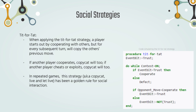A common social strategy used is the tit-for-tat method, wherein a player starts out by cooperating with others, but for every move afterwards, copies the other's previous move. If another player cooperates, the copycat will as well. If another player cheats or exploits, the copycat will follow. In repeated games, this strategy — also known as copycat or live-and-let-live — has been a golden rule for social interaction.